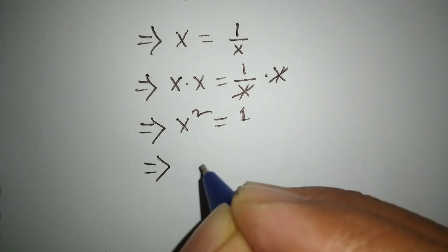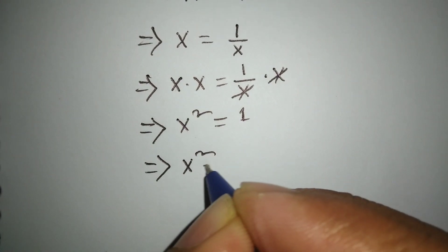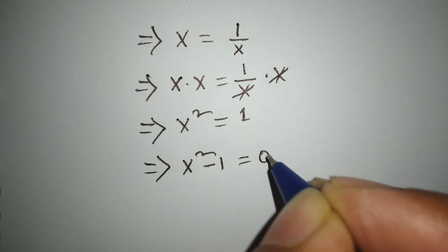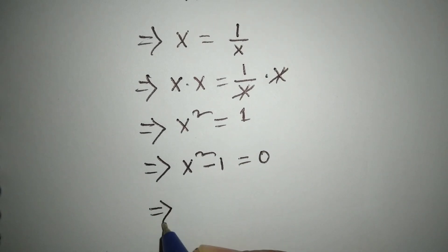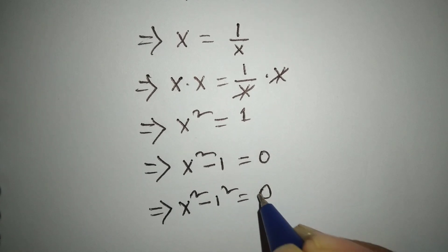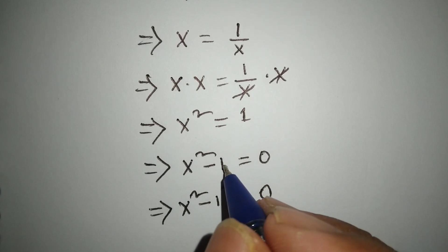Or x squared minus 1 equals 0. Or x squared minus 1 squared equals 0. Here 1 squared equals this one.